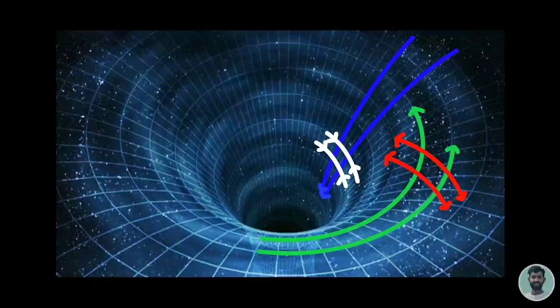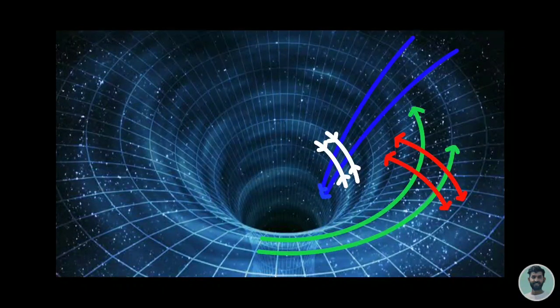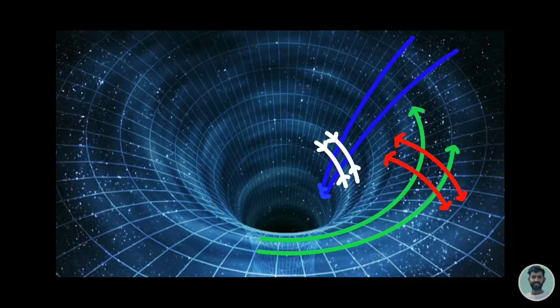So these red and white lines are called tendex lines around the black holes. These red tendex lines stretch those green paths which started parallel to each other and then they get separated. And these white tendex lines squeeze those blue lines which started as parallel paths but then headed into the black hole.